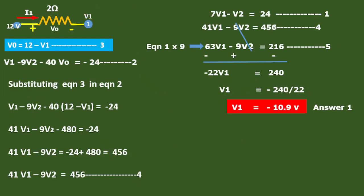Next, looking at this particular branch alone, we can write 12 minus V1 equal to V0. We write the expression for V0, and this is taken as equation number 3.